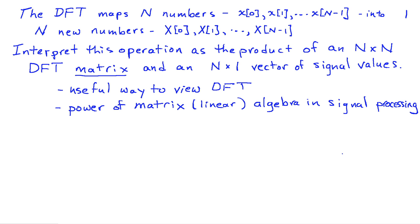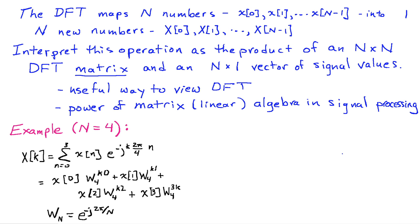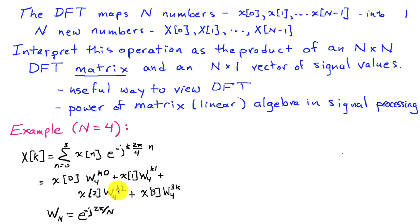This is a very useful way to view the DFT and begins to show the power of matrix or linear algebra in the field of signal processing. We're going to start with N equals 4 as an example, and I've written out the expression for the DFT when N is equal to 4. Expanding out the sum, we can see that this becomes x0 times W4 raised to the k times 0 power, where W sub N is defined as the complex exponential e to the minus j 2π over N. This expression looks like the inner product of a row vector involving the W's and a column vector involving the x's.